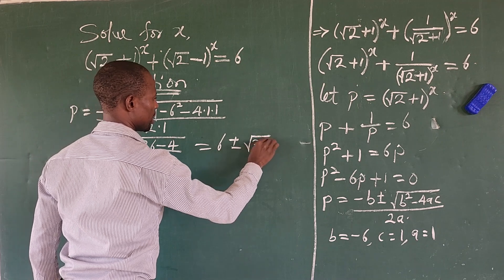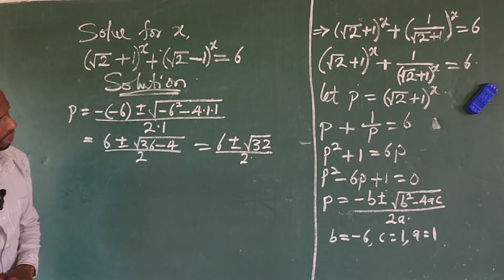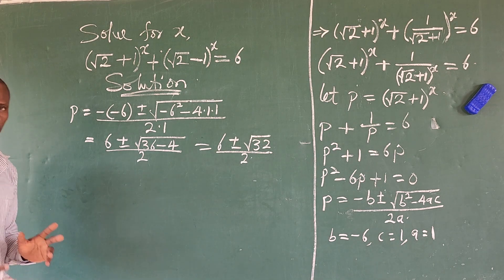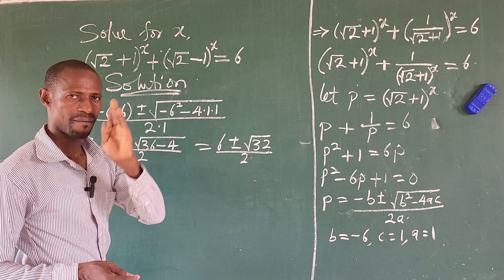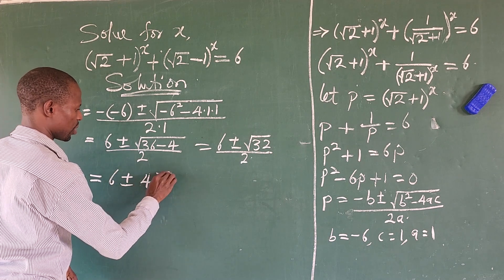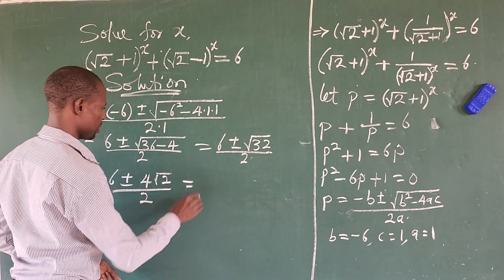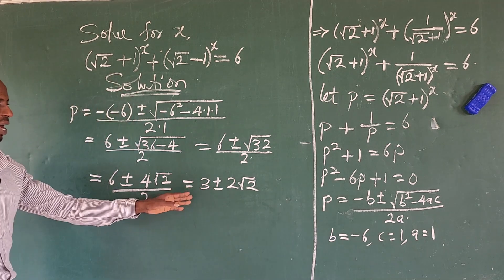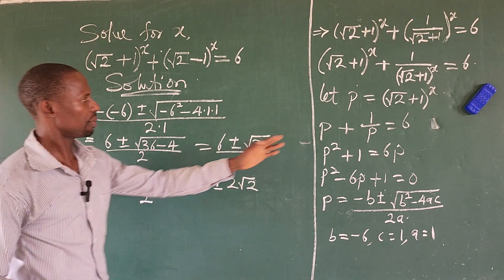That gives us [6 ± √32] / 2. We can split 32 as 16 × 2, and since 16 is a perfect square, √32 = 4√2. So we have [6 ± 4√2] / 2, which simplifies to 3 ± 2√2. So our two values are p₁ = 3 + 2√2 and p₂ = 3 - 2√2.